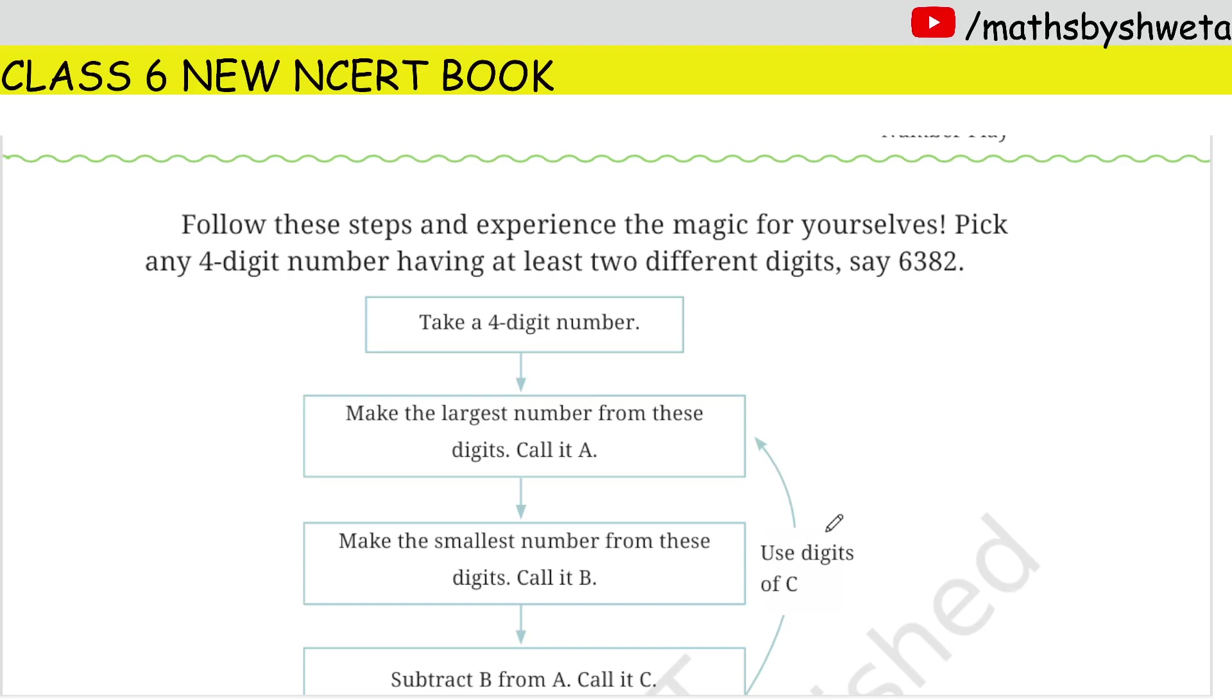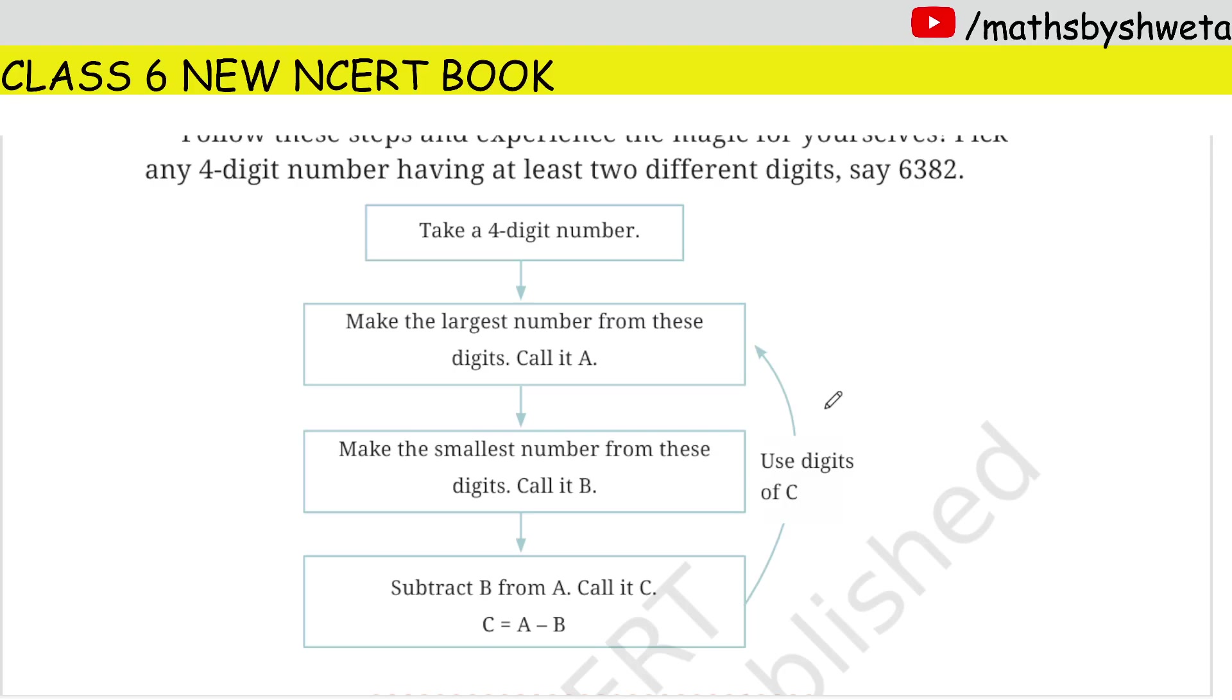Pick any four digit number having at least two different digits. If you need 4 different ones, you can also take 4 different ones. But if you want to take 3 different ones, you can also take a repeat. And if you want to take two different ones, you can make the 2 different ones. Here we have the number 6382.